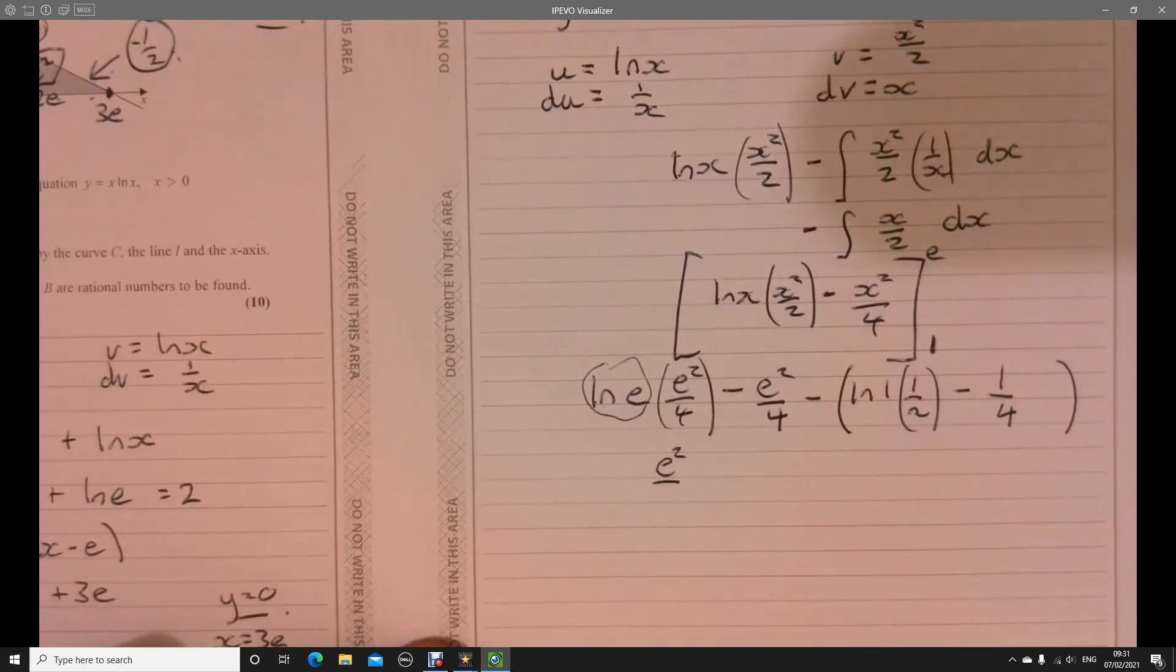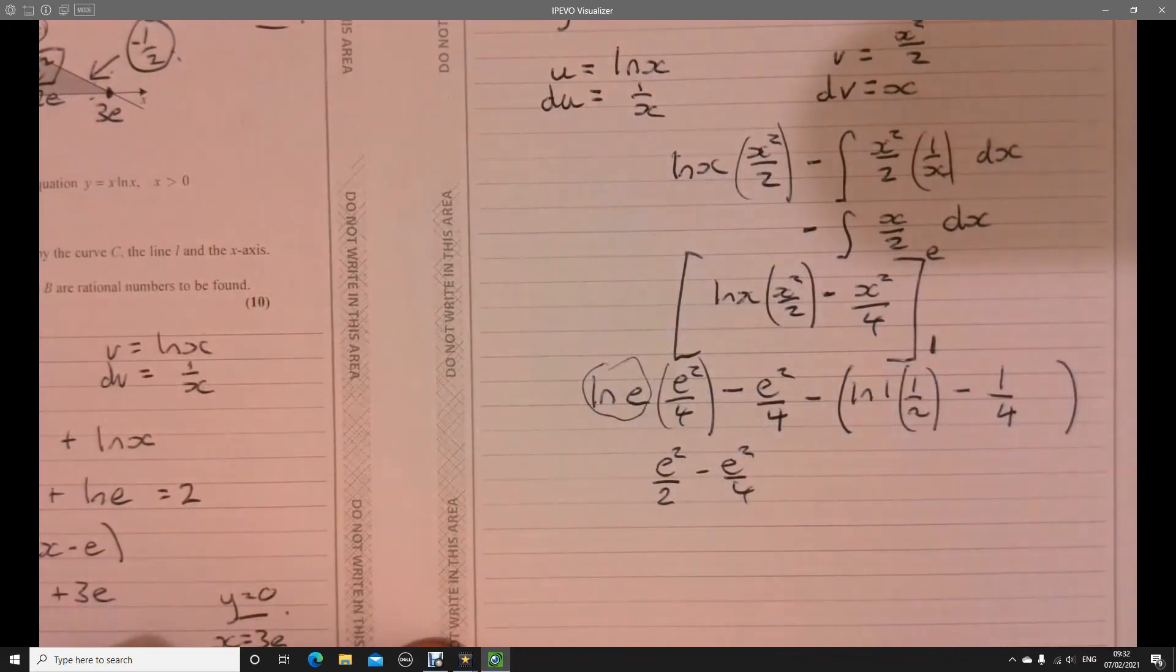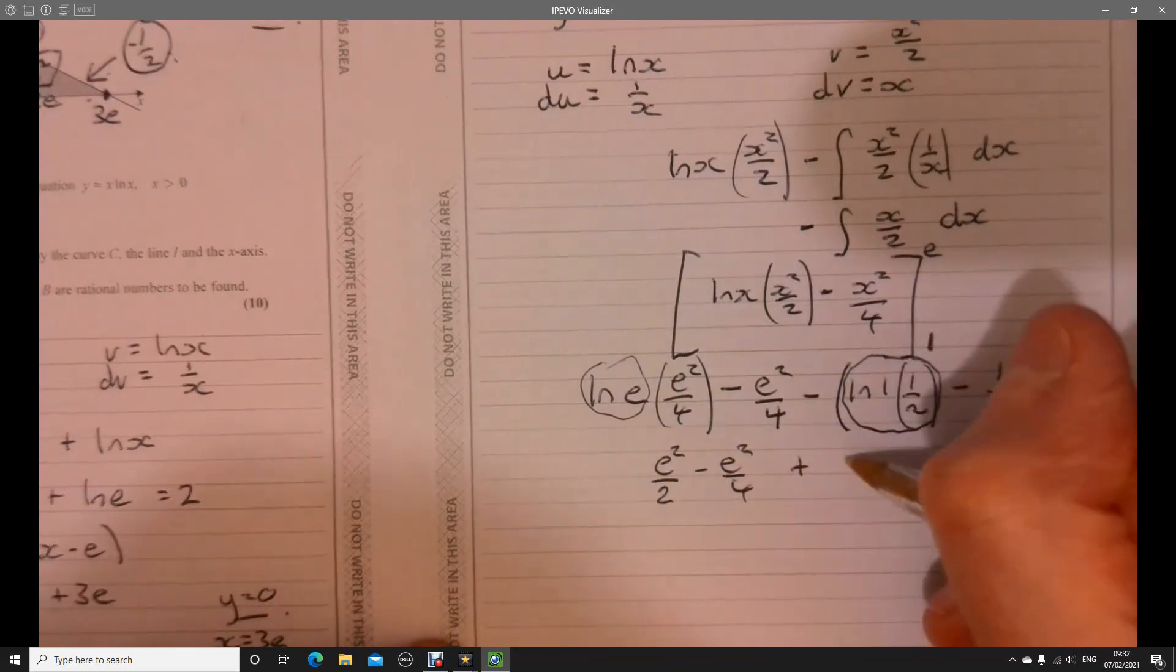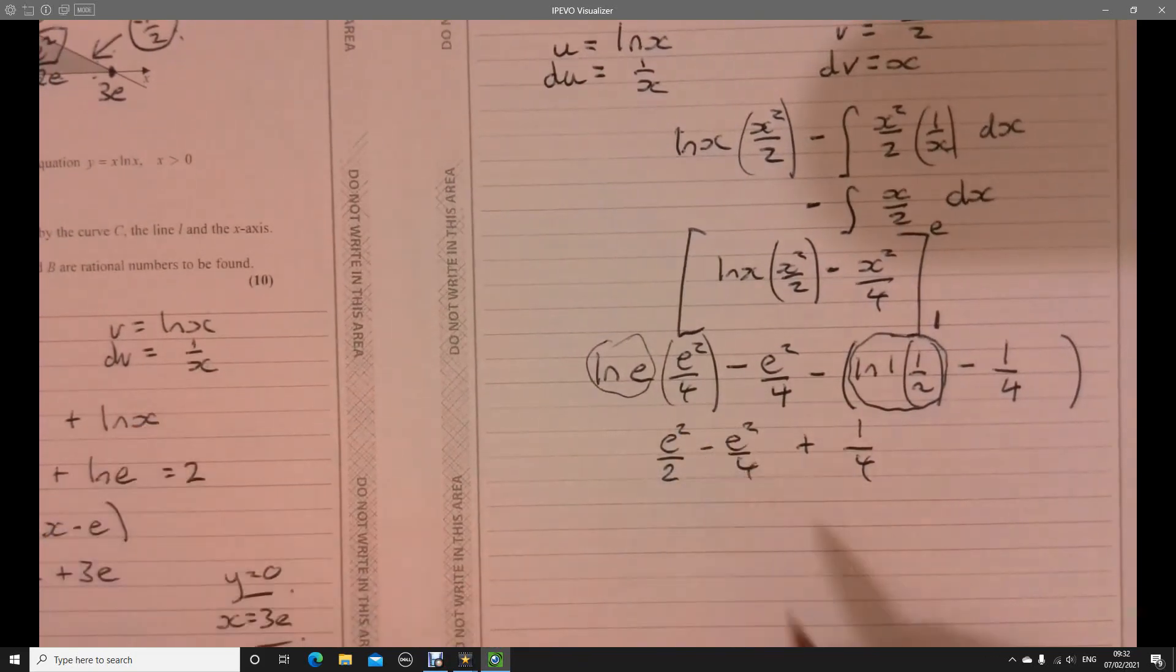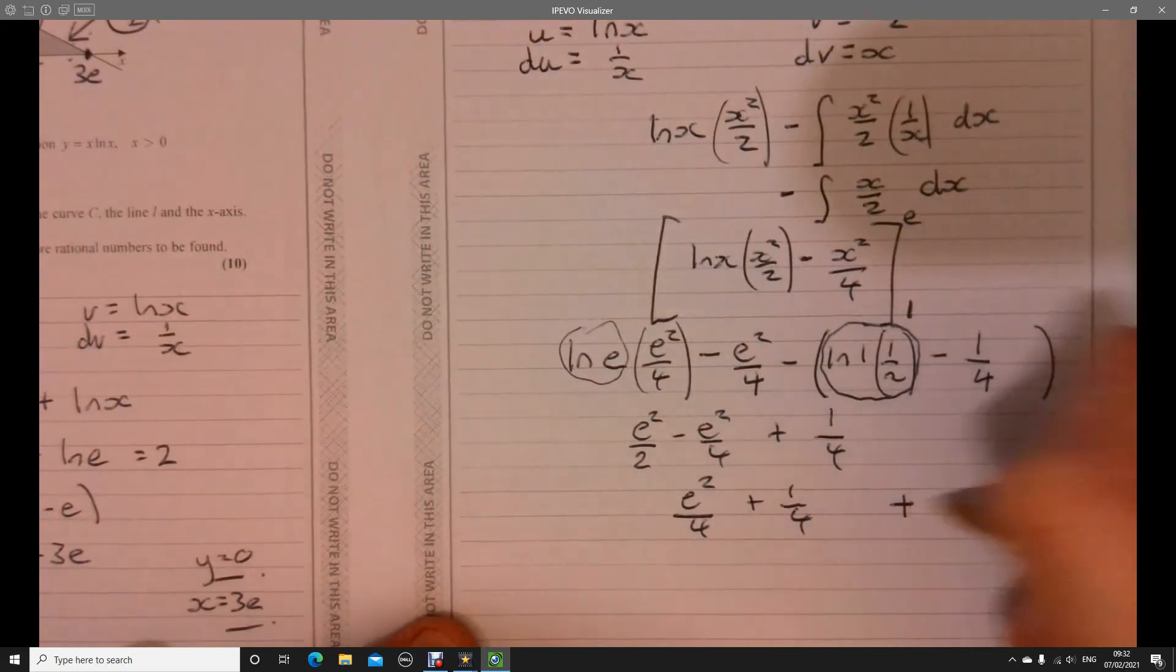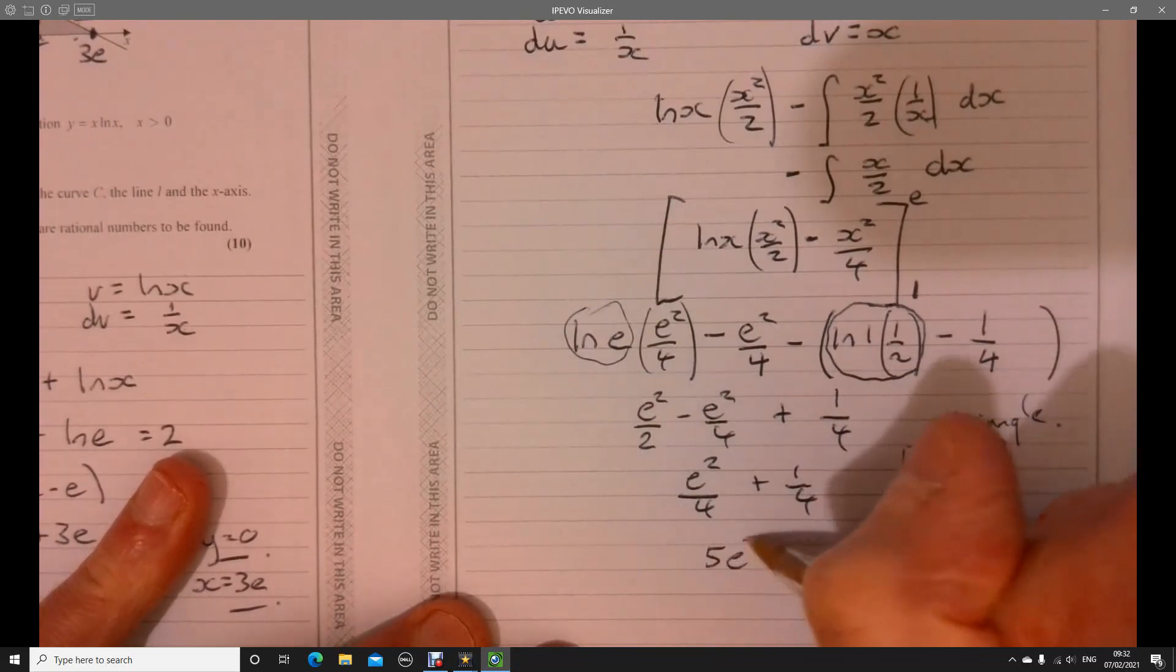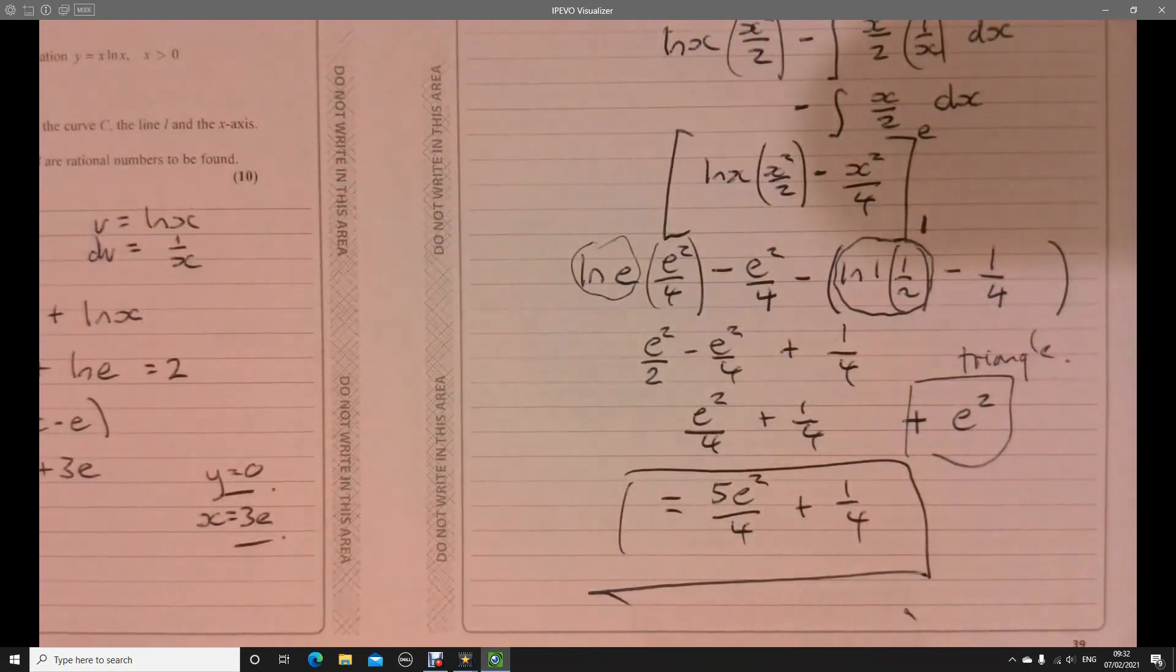So what's this going to give us here? We've got E squared over 2. Take away E squared over 4. This part, ln 1. So we should know ln 1 is 0. You can just try it out in your calculator if you're not too sure. And then we've got... So that's going to turn into a plus. 1 quarter. So E squared over 2. Take away E squared over 4. So that's going to be E squared over 4 plus 1 quarter. Don't forget to add in the E squared for the triangle. Piece all that together. And what have we got? We've got 5 E squared over 4 plus 1 quarter. There we are.